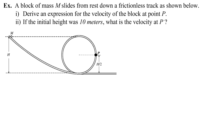Sometimes you'll be asked to solve a problem where you don't need to use the critical speed or centripetal force equation, and instead you express things in terms of g. So let's look at this: a block of mass m slides from rest down a frictionless track. We want to derive an expression for the velocity of the block at point p, then use 10 meters as the initial height to find the actual velocity.